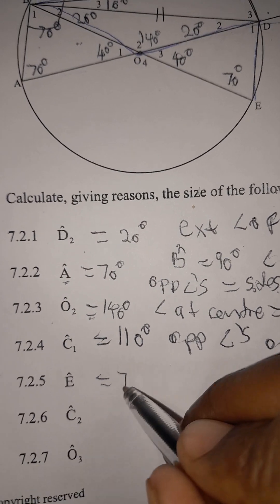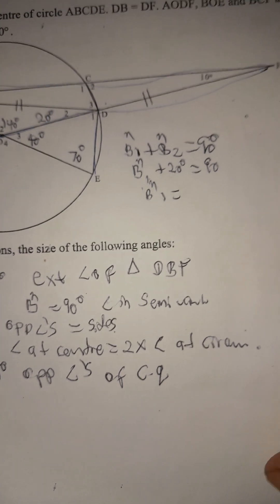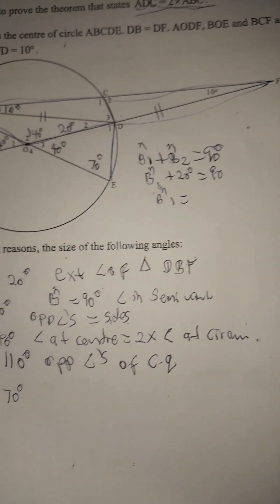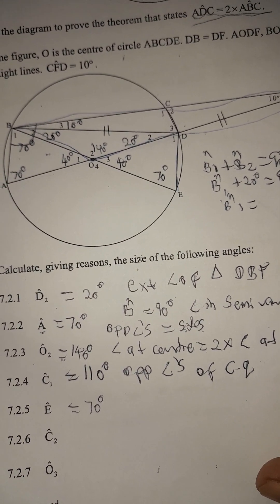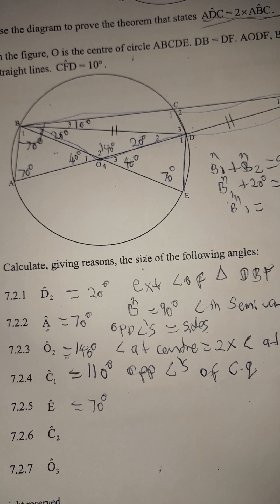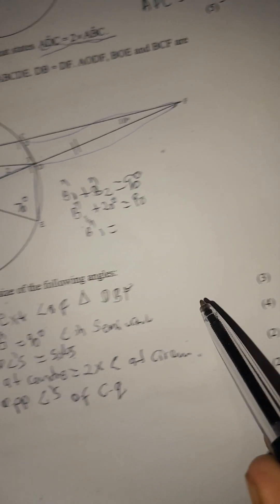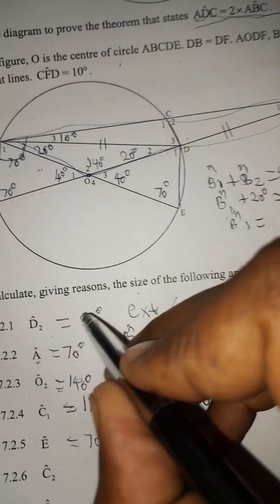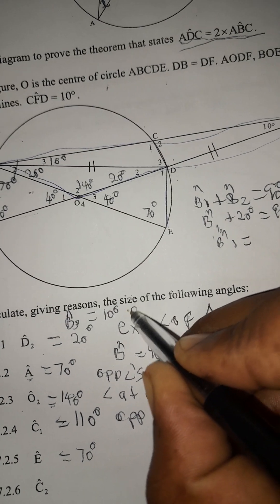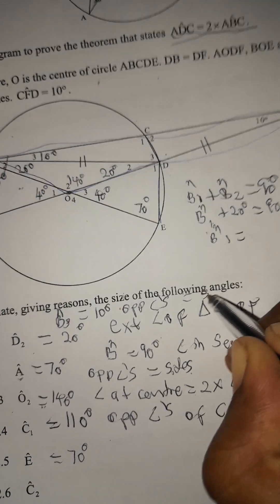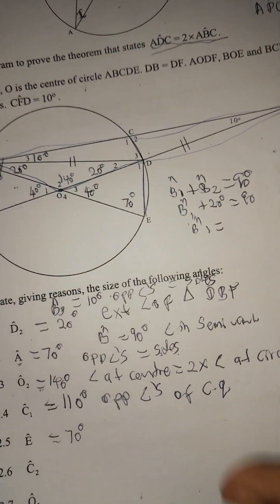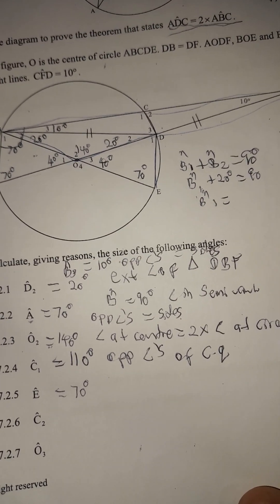For angle E, it equals 70 degrees. Remember to write your statement and reason according to the marks. Also, angle B3 equals 10 degrees — reason: opposite angles equal sides, since DF and BD are equal as given.